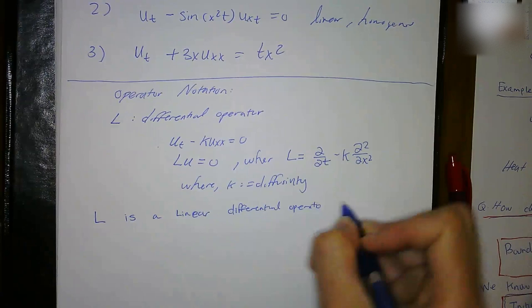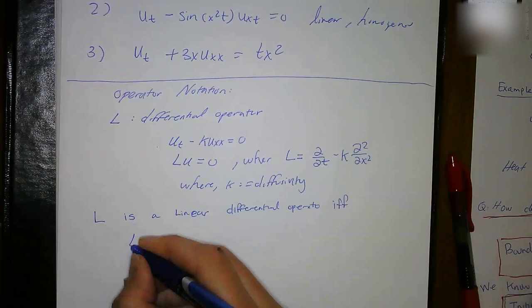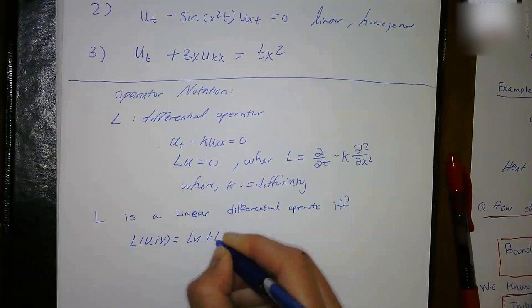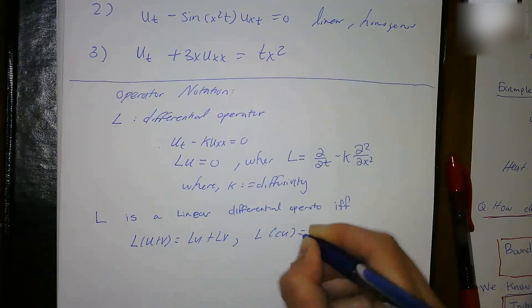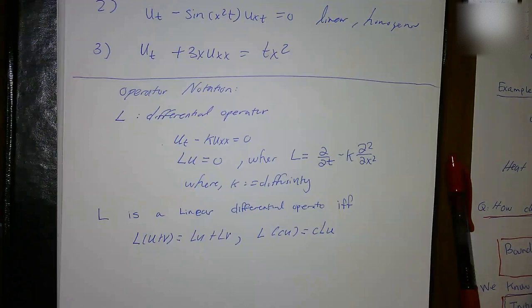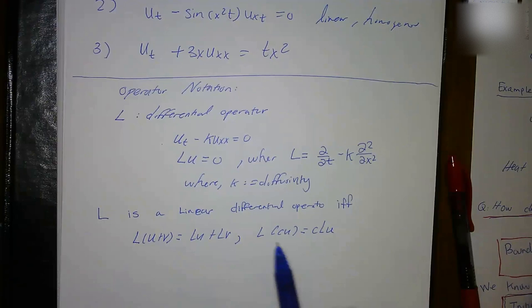L is a linear differential operator if and only if the sum of two functions is also a solution, or a constant multiple of a solution is also a solution — if they are governed by these two properties. If L(u) equals 0 then it is called homogeneous. If L(u) equals some function, it's not homogeneous. In linear equations, we have algebraic structure to their solutions: the sum of two solutions is a solution, and a constant multiple of a solution is also a solution.